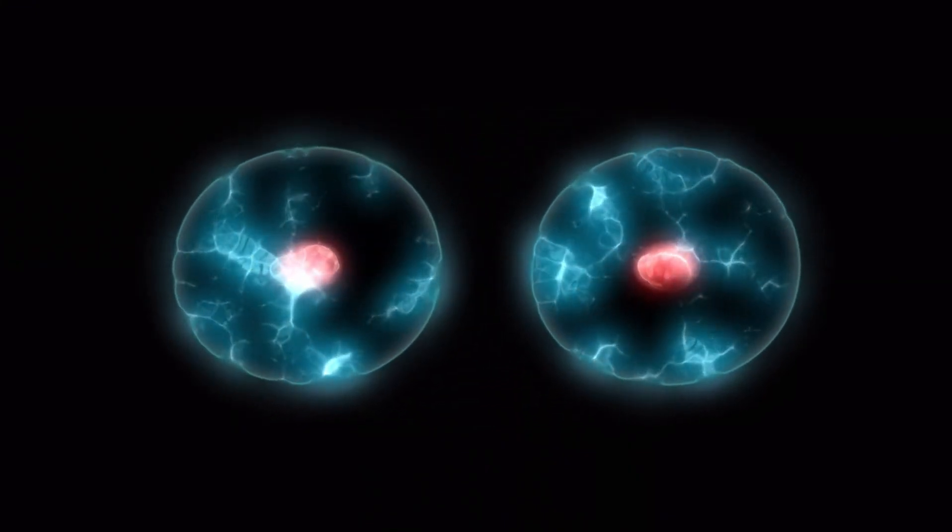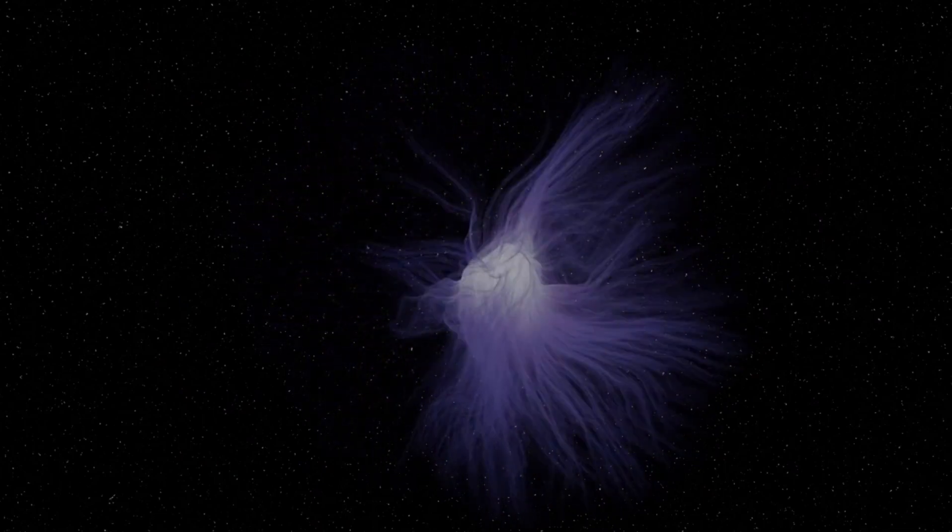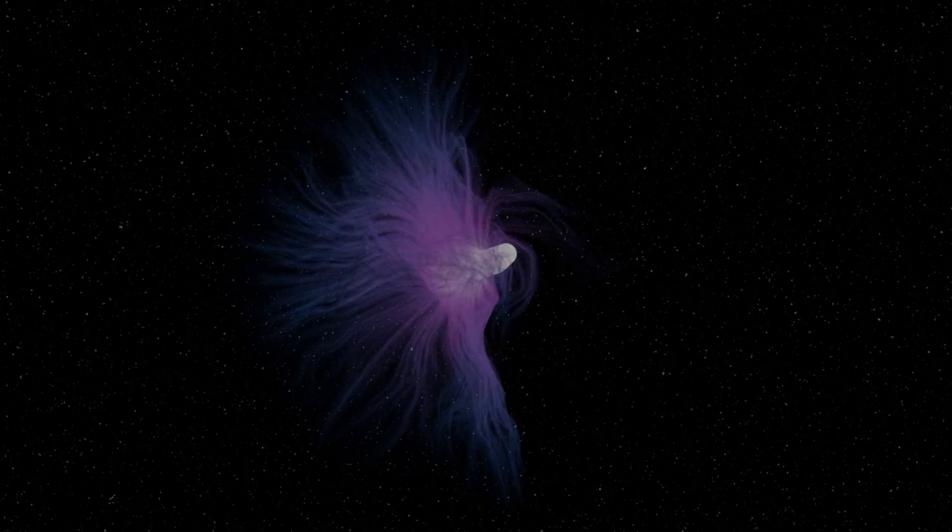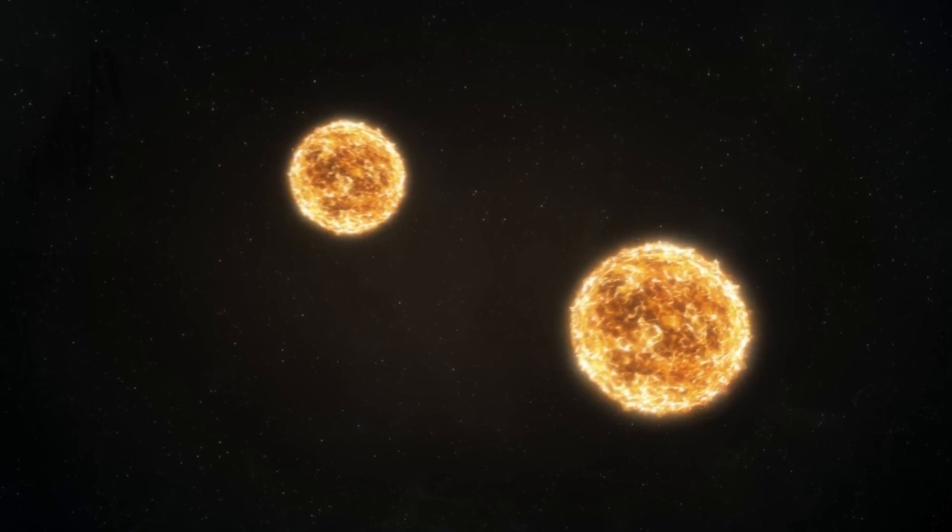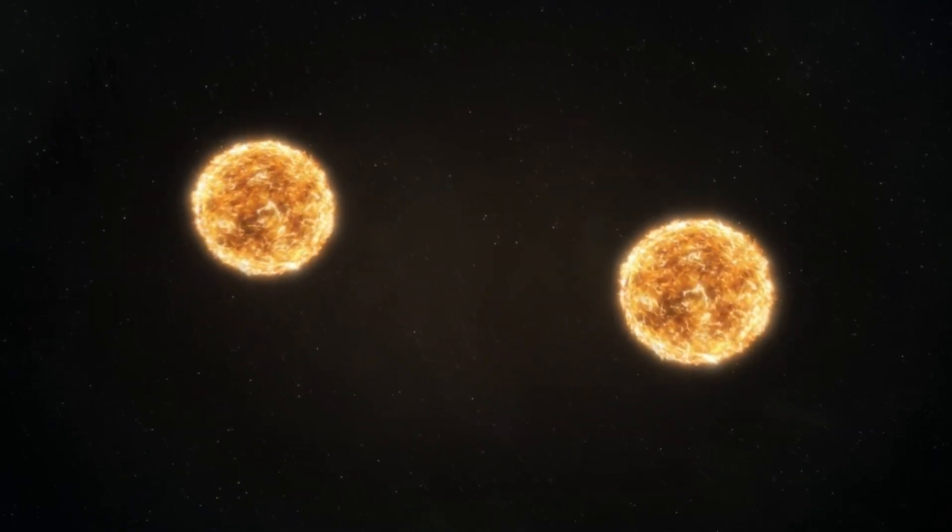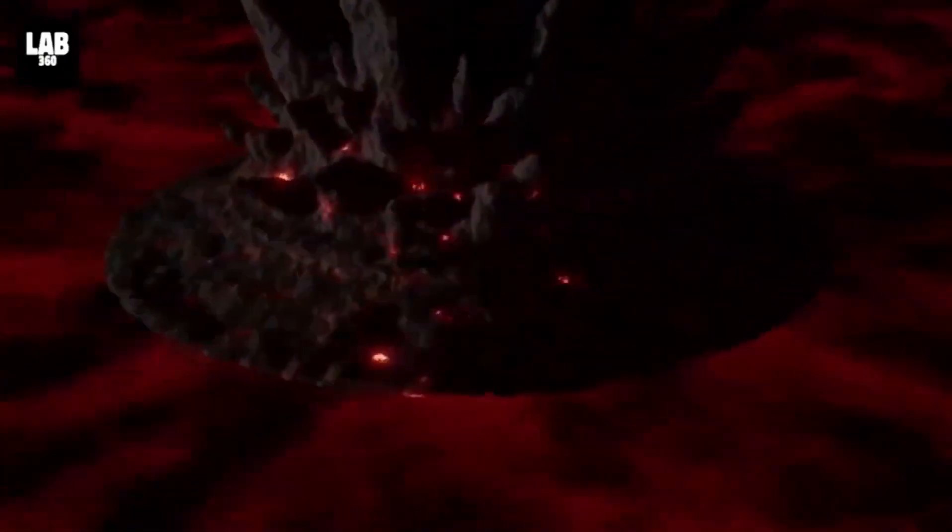Unlike lighter elements, the fusion of iron does not produce energy. As a result, the core becomes unstable and collapses under its own gravity, triggering a catastrophic explosion. This type of stellar explosion, known as a Type 2 supernova, is characterized by a rapid release of energy, radiation, and stellar material.